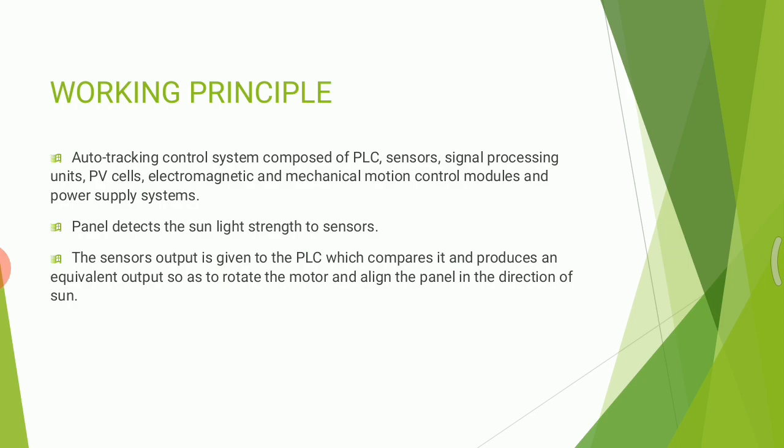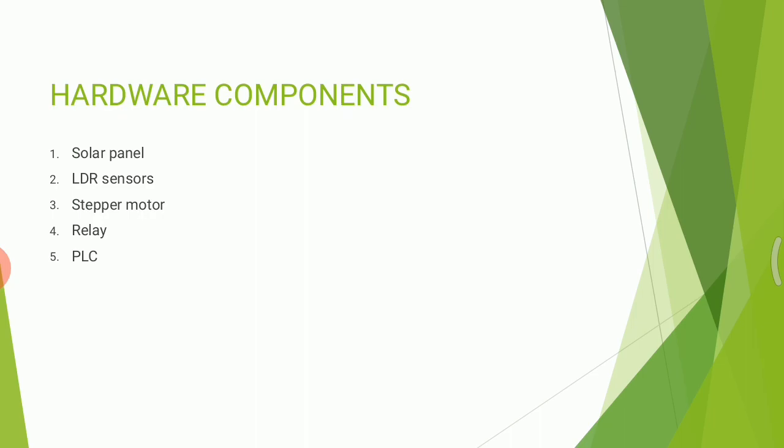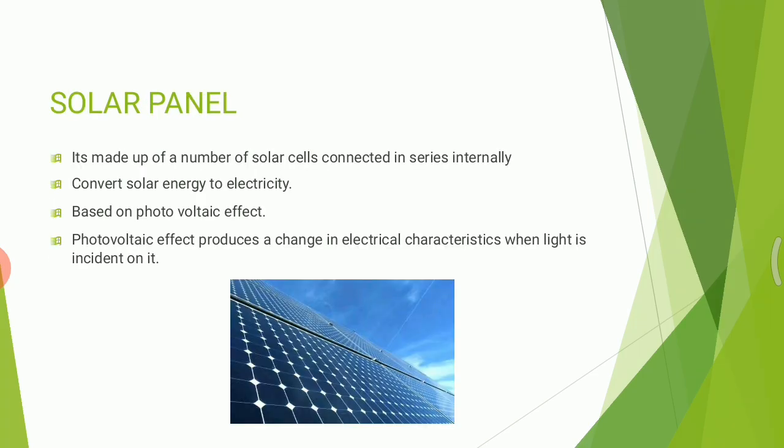The sensors detect the sunlight strength — the sensors detect the heat and send the signal to the panel. With the help of a PLC, the panel is tilted using a rotor or motor. The hardware components are: solar panel, LDR sensors, stepper motor, relay, and PLC.